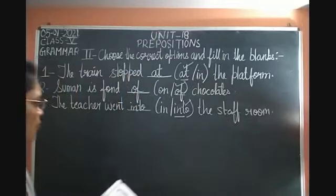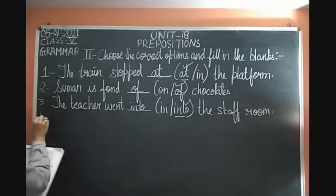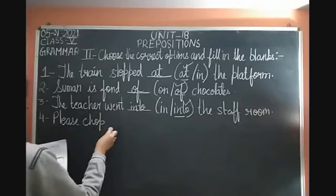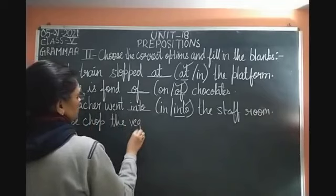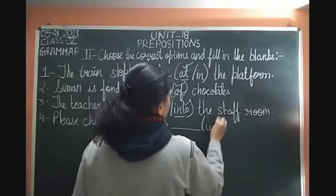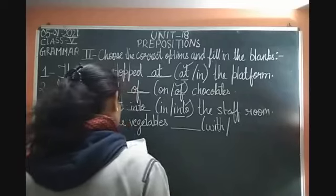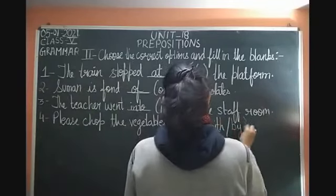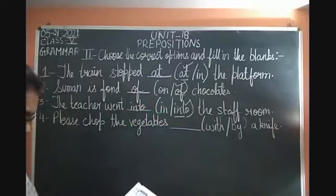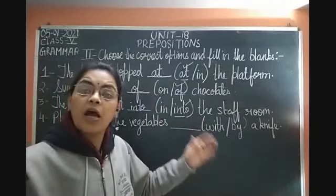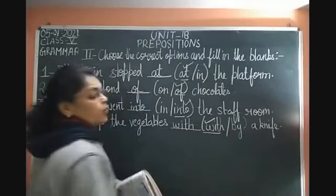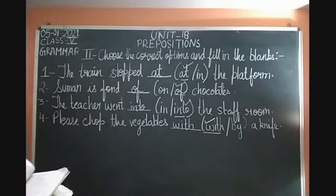Fourth: Please chop the vegetables ___ a knife. Options are 'with' or 'by.' You chop the vegetables with a knife — knife se karna hai, uske liye 'with.' So write 'with' in the fourth blank.